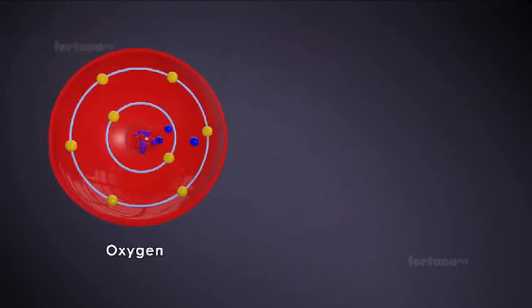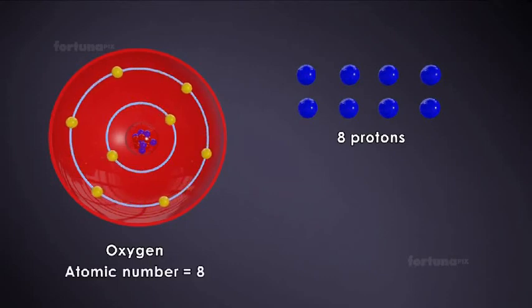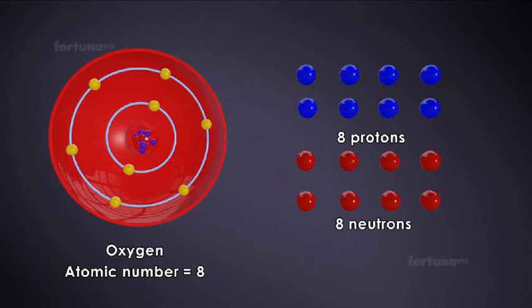An oxygen atom will contain eight protons, so its atomic number is eight. Oxygen also contains eight neutrons, making its mass number 16.